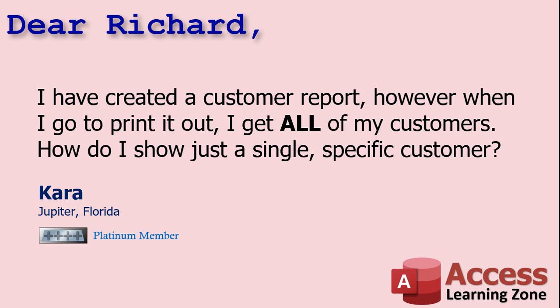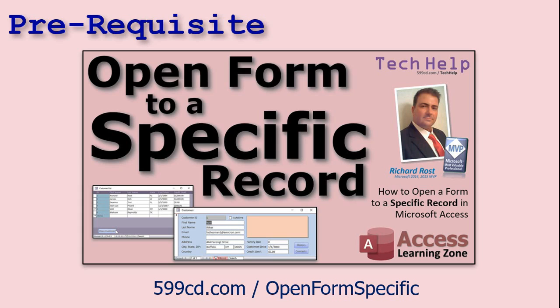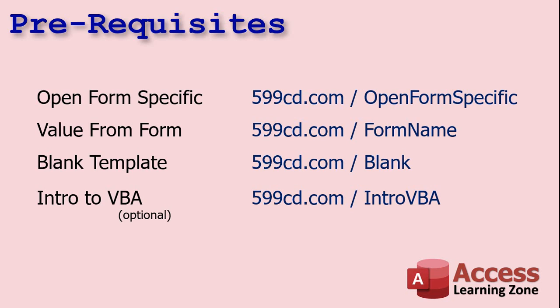In this video I'm going to show you two different ways that you can open a report and show specific data. First, as a prerequisite, go watch my video on how to open a form and show a specific record. Also watch the 'value from a form' video that shows you how to get a value from an open form — that's required for this. Watch the blank template video where I build my blank tech help template, and optionally watch my intro to VBA video. The second technique requires one line of VBA code — it's the best way to do it.